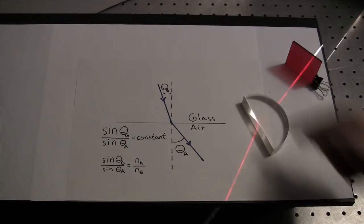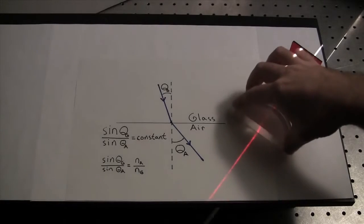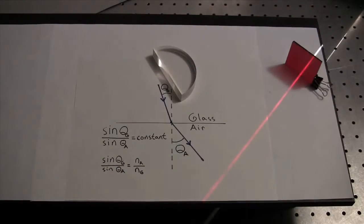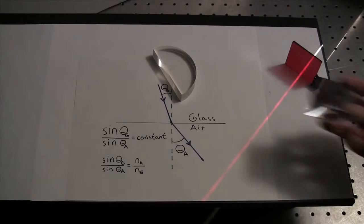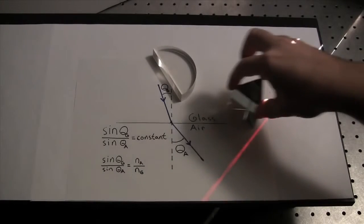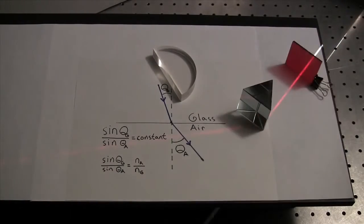This expression allows us to predict what will happen at a planar boundary as we change the angle of incidence. It also allows us to deal with more complicated shapes, like this triangular prism. It's just a matter of geometry and keeping track of the angles.